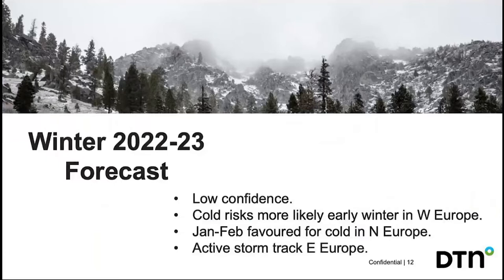So, what about the coming winter — will it be colder and snowier? We start with a rather low-confidence forecast. The models differ somewhat from the analogues, making it especially uncertain. Nevertheless, it's unlikely to be as consistently and widely mild as last winter. We have risks of colder-than-normal conditions developing for western Europe in early winter, possibly starting in late November. Northern Europe, mainly Scandinavia, faces anomalous cold more likely focused in January and February. Meanwhile, we expect an active storm track across eastern Europe with above-average precipitation, while much of Europe should be drier than normal.